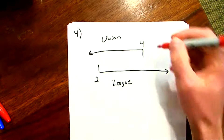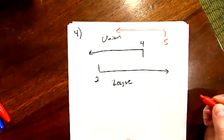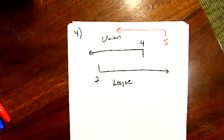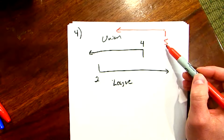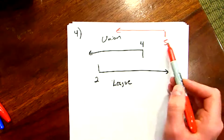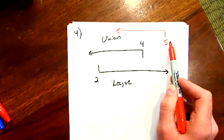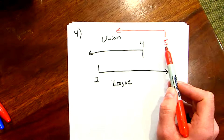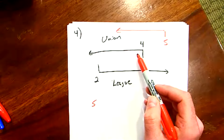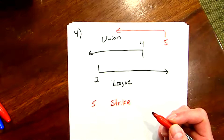If the league believes the union would accept five or anything below it, they have incorrect beliefs. This could lead to the league proposing five games. The union would come back and say that's above our threat point, we won't accept it — and so potentially we could see the union going on strike.